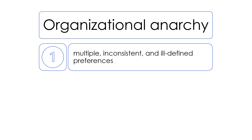First, when decision-makers have multiple inconsistent and ill-defined preferences, the goals of organizational decision-making are ambiguous. Decision-makers don't have a coherent goal guiding their decisions. For example, a committee formed to address a particular problem has members with competing priorities and agendas, making meetings unproductive — no decision is made and the problem remains unresolved. Another example: a new superintendent starts an initiative from a previous district, but it is not well aligned with the current district's goals or capacities, and it eventually fails.